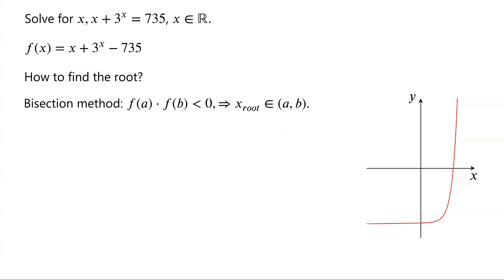Because f of 5 is equal to 5 plus 3 to the power of 5, minus 735. 3 to the power of 5 equals 243. So f of 5 is less than 0.